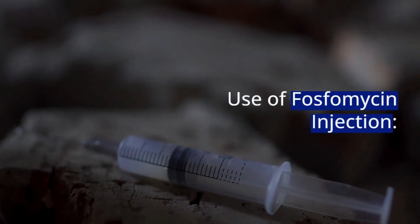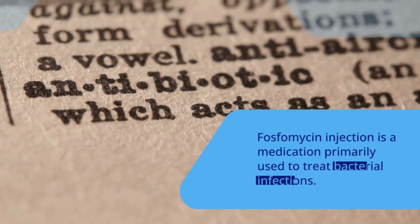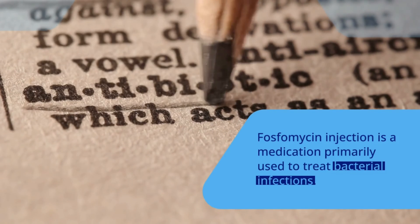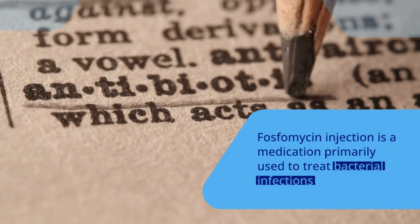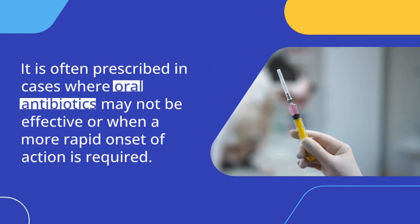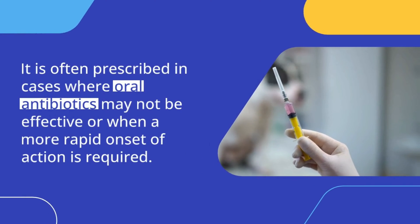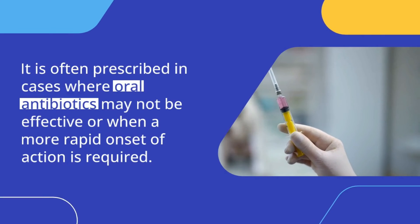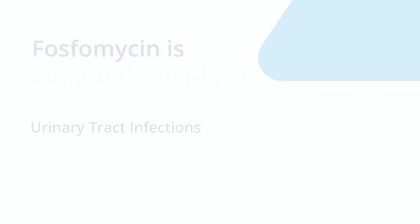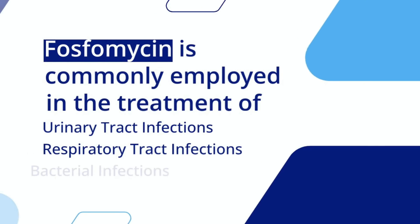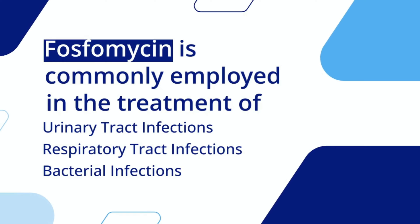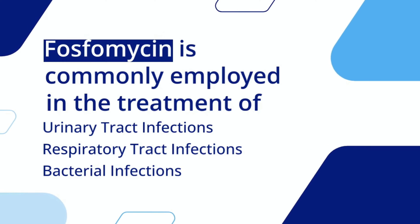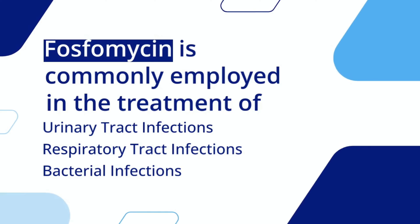Starting with the uses of fosfomycin injection: fosfomycin injection is a medication primarily used to treat bacterial infections. It is often prescribed in cases where oral antibiotics may not be effective, or when a more rapid onset of action is required. Fosfomycin is commonly employed in the treatment of urinary tract infections, respiratory tract infections, and other bacterial infections.